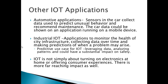Another example is an application that could be used by a customer support team to troubleshoot a remote device. In an industrial IoT use case, there may be applications to monitor the health of city infrastructure, collecting data over time, and making predictions of when a problem may arise. These types of applications are predictive in nature, leveraging data and analyzing patterns, and could have a substantial impact on safety. As such, it's important to consider that IoT is not simply about turning on electronics at home or offering consumer experiences. There is far more reaching impact as well.